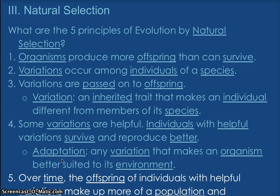Just to repeat the five principles of natural selection in both seventh grader and science language. Number one: organisms produce more offspring than can survive. Living things have more babies if they have more predators — think about turtles, fish — many organisms have multiple births and that is why. Number two: variations occur among individuals of a species — there are differences; they look different from each other. Variations are passed on to offspring, meaning these variations are in their genetic code, their DNA, their genes. A variation by definition is an inherited trait that makes an individual different from other members of its species — it gets passed on.